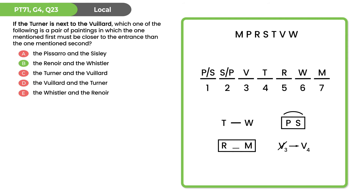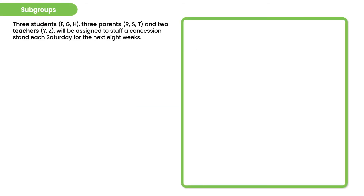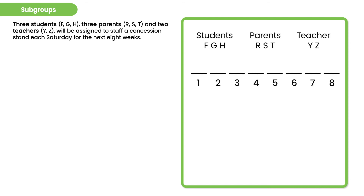Now that we've taken a look at a real example, let's talk about things that can come up in standard ordering games generally. The first is subgroups, which occurs in about 7% of standard ordering games. Subgroups is when they give us different kinds of players — for example, three students F, G, and H; three parents R, S, and T; and two teachers Y and Z, assigned to staff a concession stand each Saturday for eight weeks. The way we deal with that is to create subgroups in our roster — one area for students, one for parents, one for teachers.